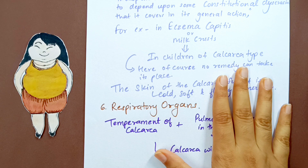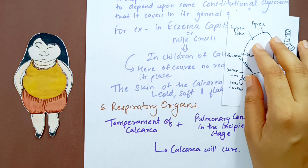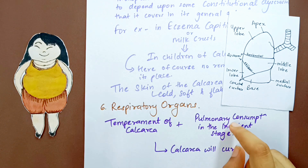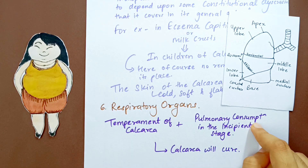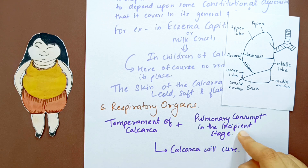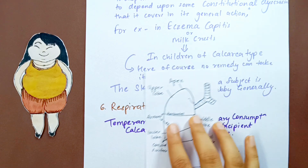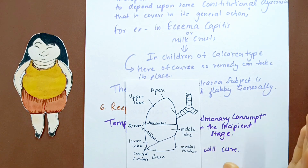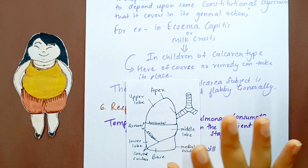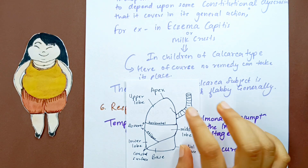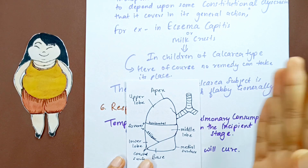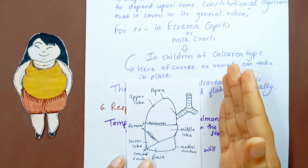Regarding the respiratory organs, if the temperament of Calcarea is present along with pulmonary consumption (TB) in its incipient stage, Calcarea Carb will cure. The middle and upper portion of the right lung is involved in Calcarea Carb, whereas in Sulfur the upper left lung is involved — another useful differentiating point between these two remedies.